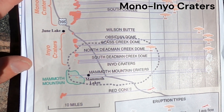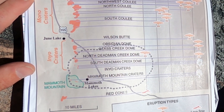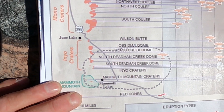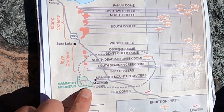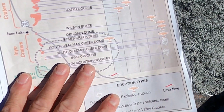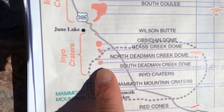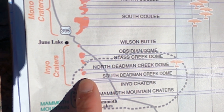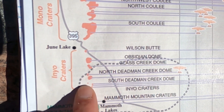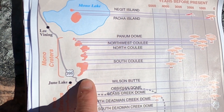These volcanoes are all fairly young; they've all erupted within the last few thousand years. They form a chain that trends more or less north-south, from the Mammoth area and the Long Valley Caldera, shown here with this outline. You can see all the volcanoes in the chain — we're right now at Obsidian Dome, part of the Inyo chain, and north of the highway the name changes to the Mono chain.